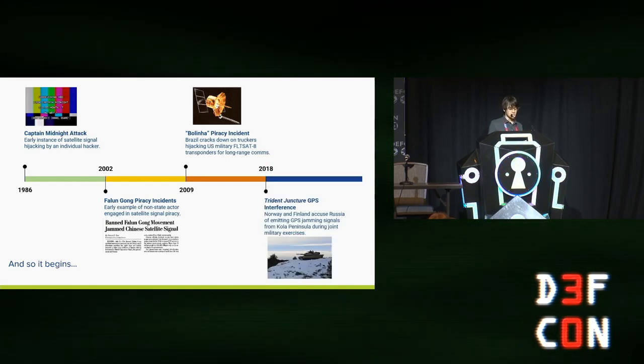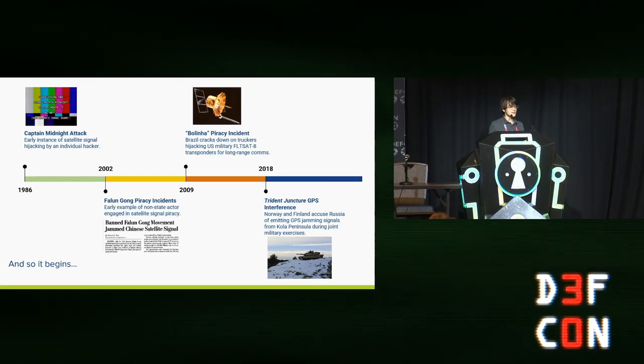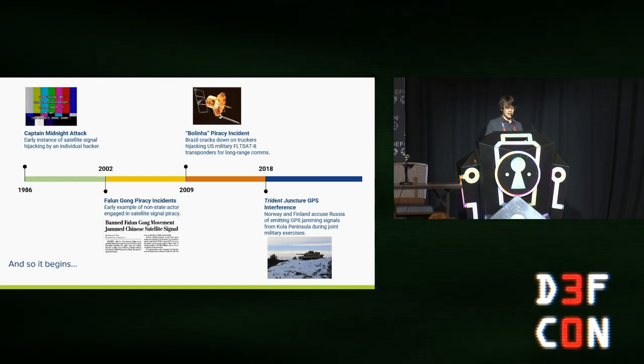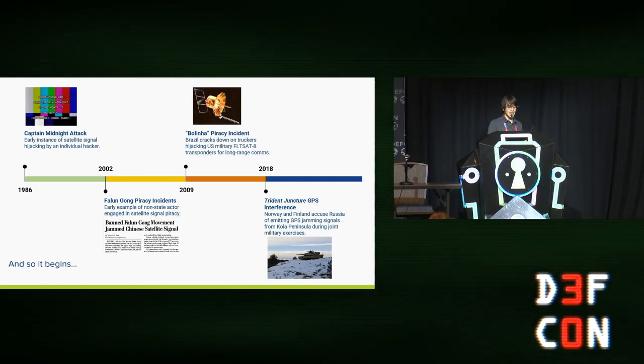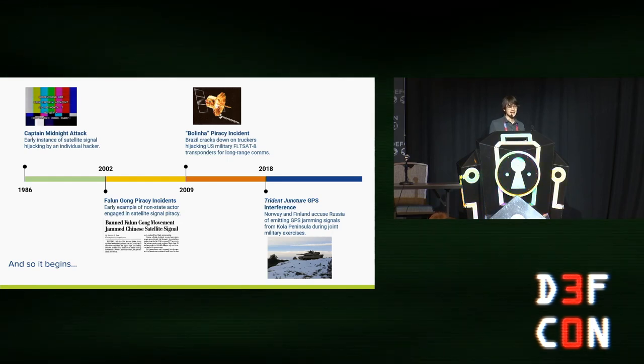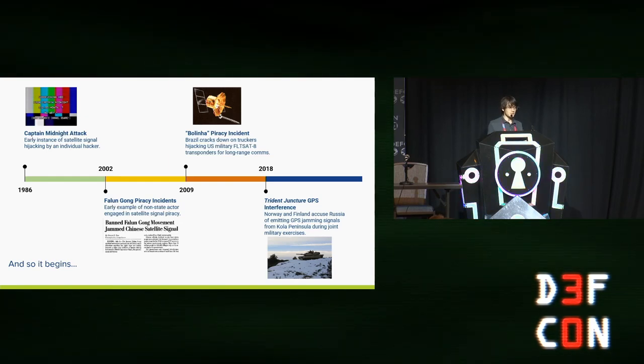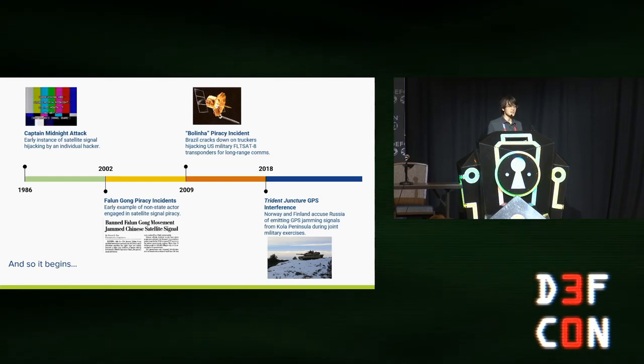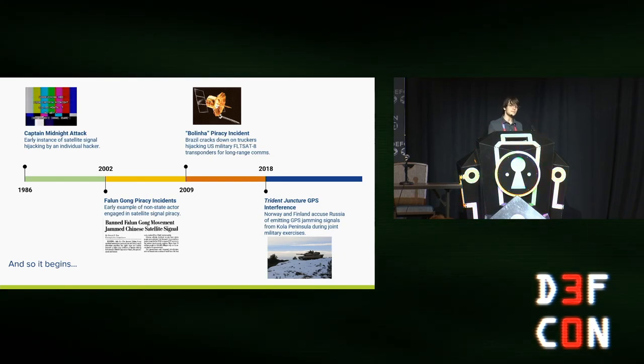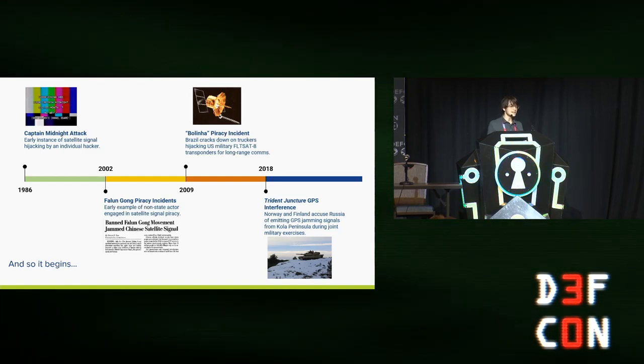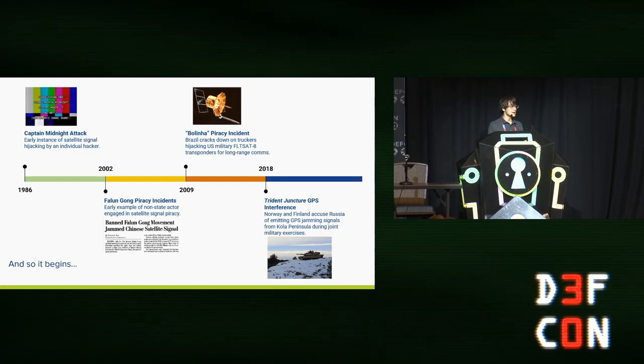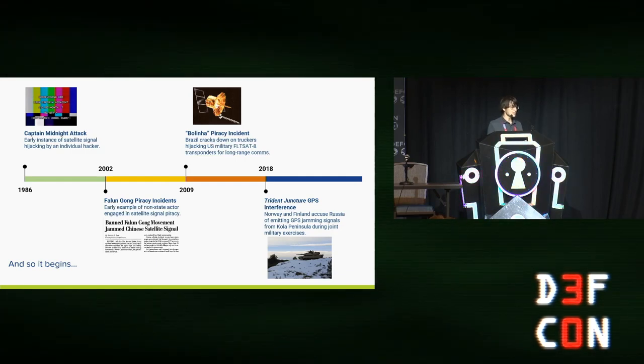One final incident I think is worth mentioning is in 2018, Norway and Finland accused Russia of interfering with GPS signals during some NATO war exercises from a base in the Arctic. And we'll talk about GPS interference today. It's actually not that technically hard of an attack to pull off. But I think what's interesting is that this was not a precursor to an invasion of Norway by Russia. This was something done during a time of relative peace just as a form of harassment. And as we think about securing space assets, this idea that countries may mess with each other's space assets during times of peace I think is particularly concerning and a good motivator for why we need space cybersecurity now.